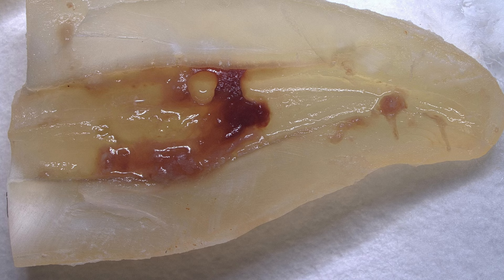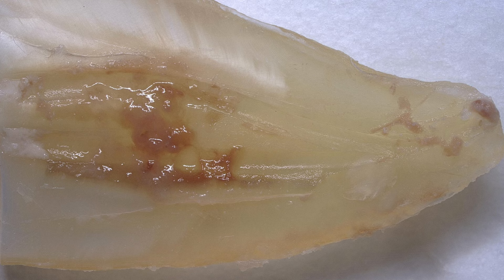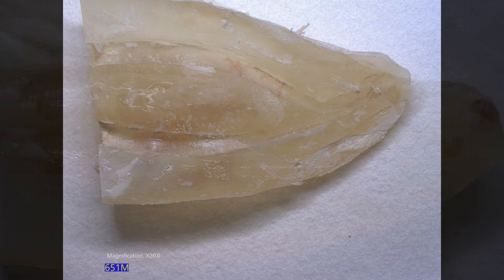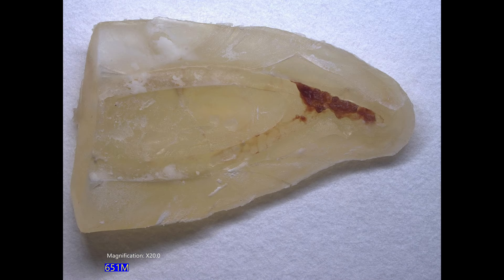Pretty nice anatomy. This is the mesial root sectioned sagittally. So you can see there's quite a bit of pulp tissue still in the root. And this is what the mesial root looked like when it was completely dehydrated.